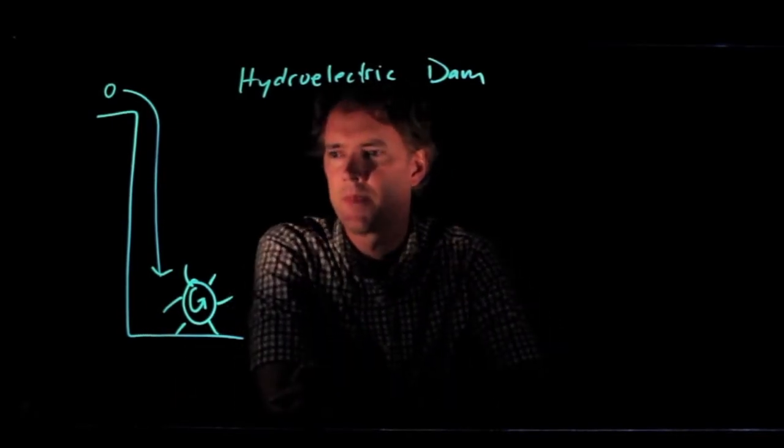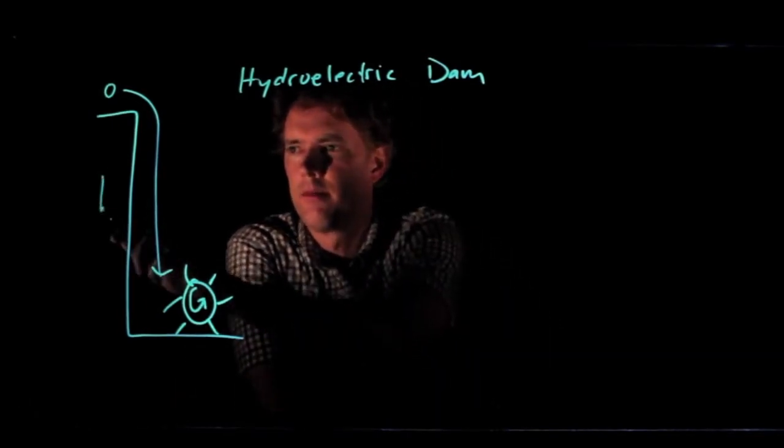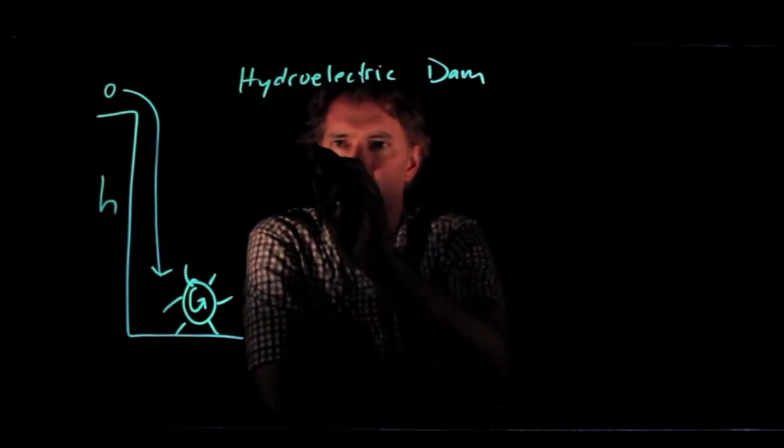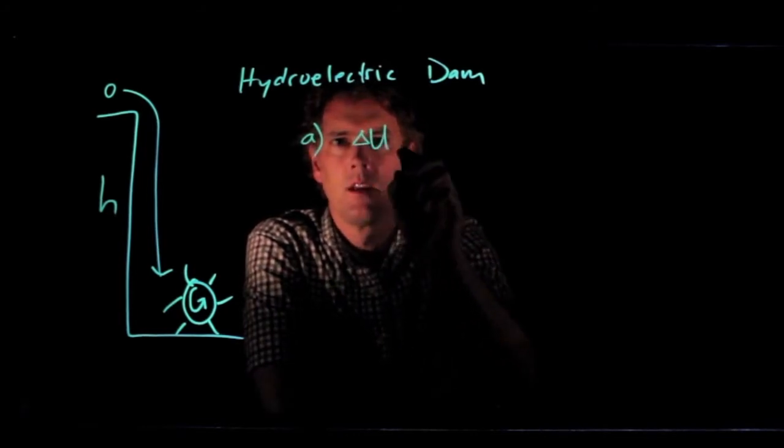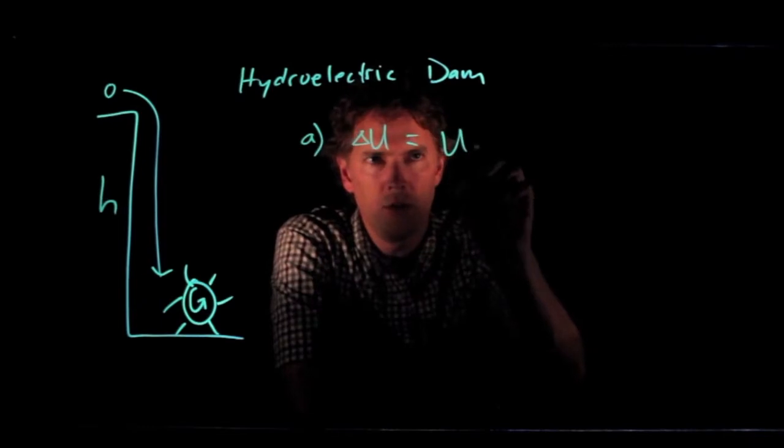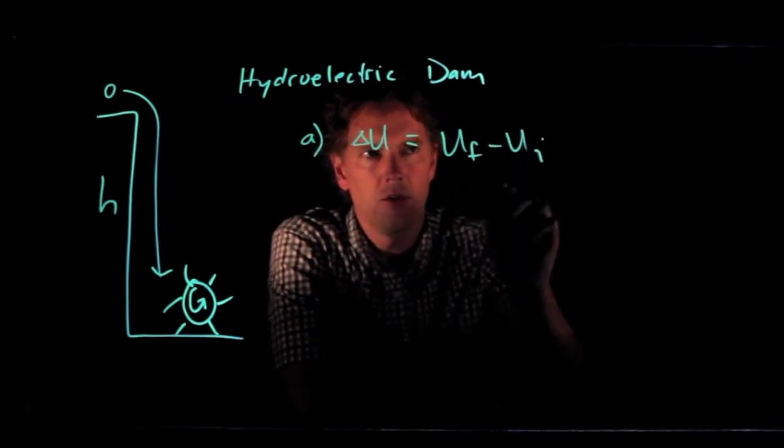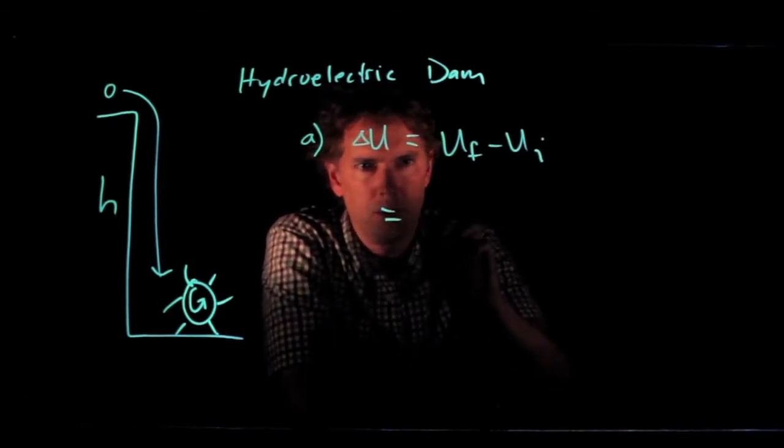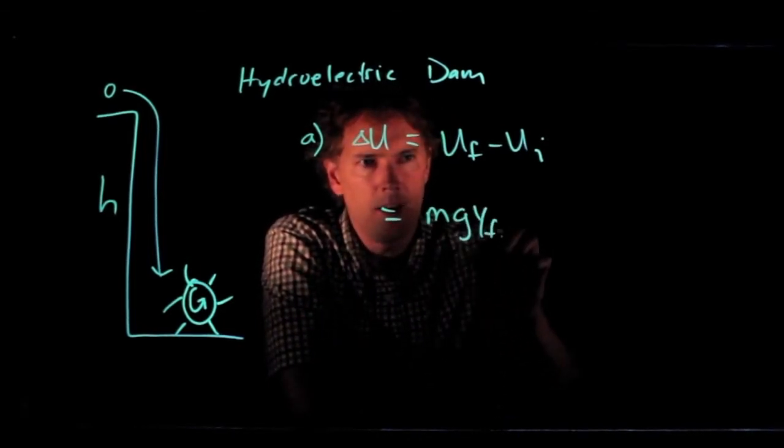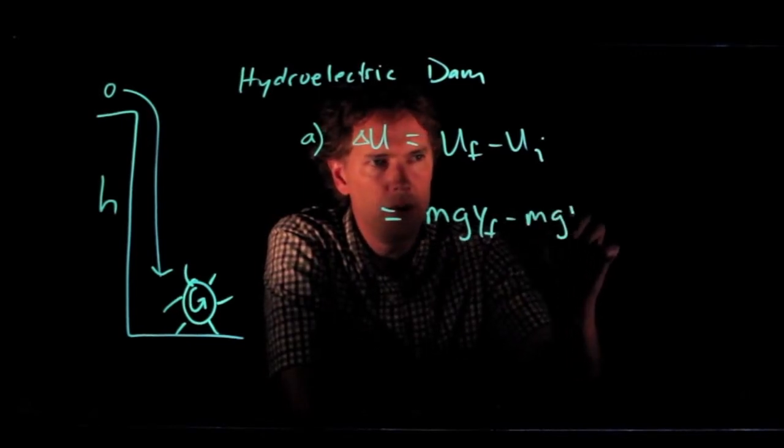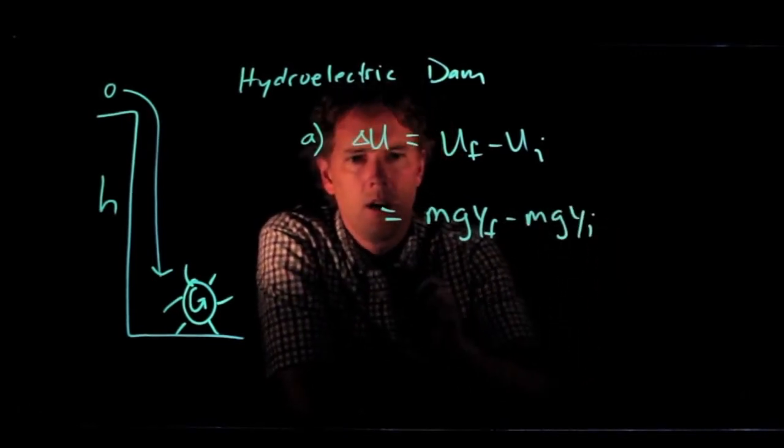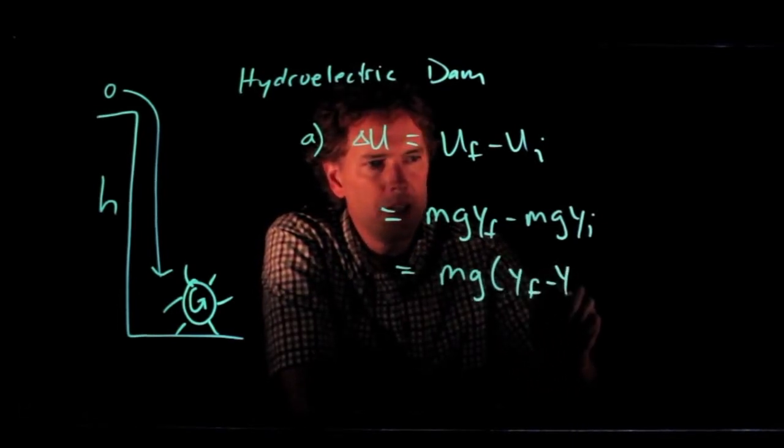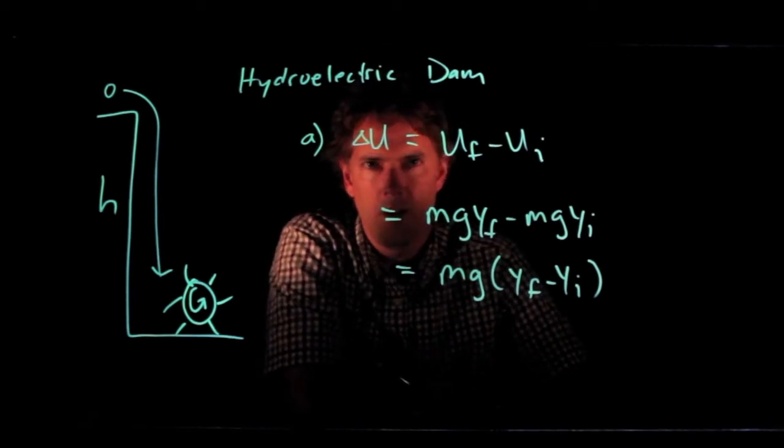So, the first question here is, let's say we have water falling of height h, what is the change in gravitational potential energy? Delta U is simply U final minus U initial. Since we're dealing with gravitational potential energy, this is equal to mgy final minus mgy initial. mgy factors out, we can write it as mg times the quantity y final minus y initial.